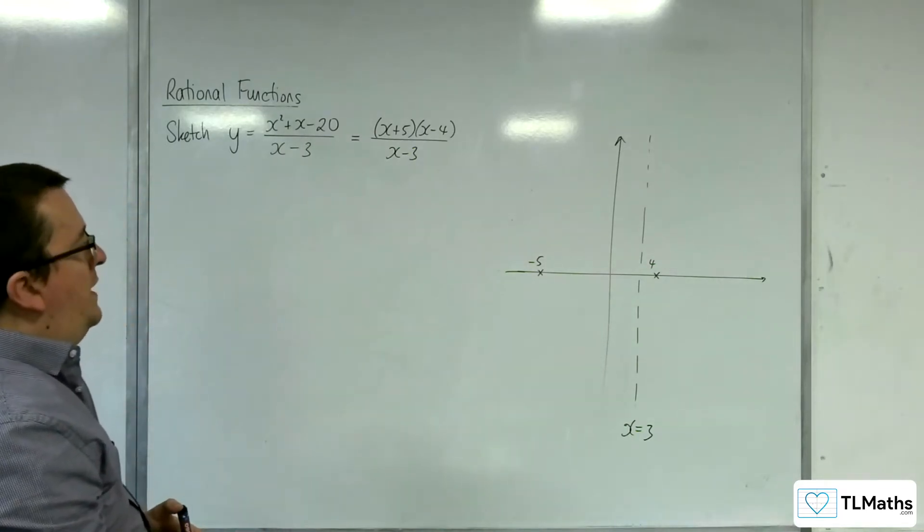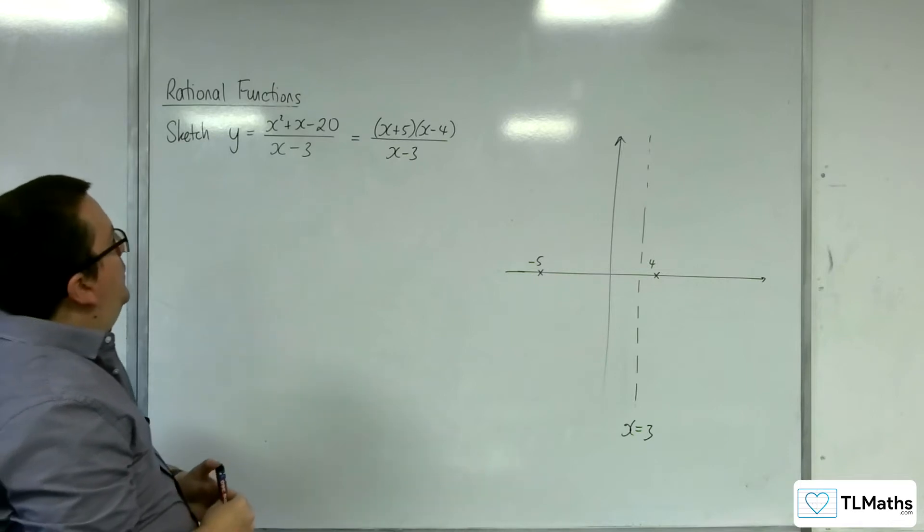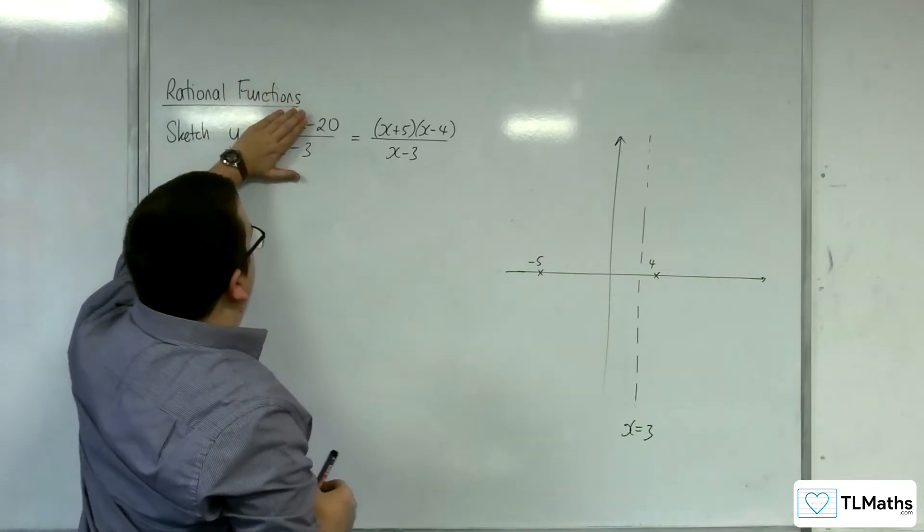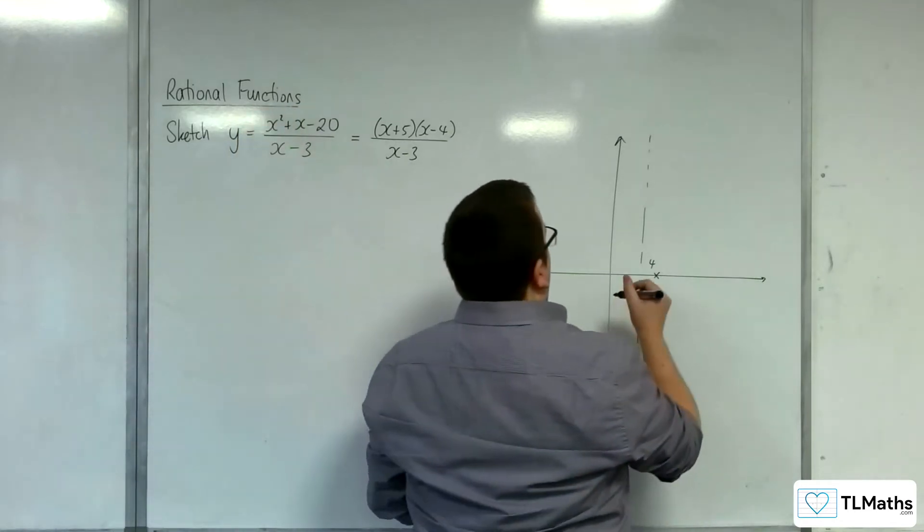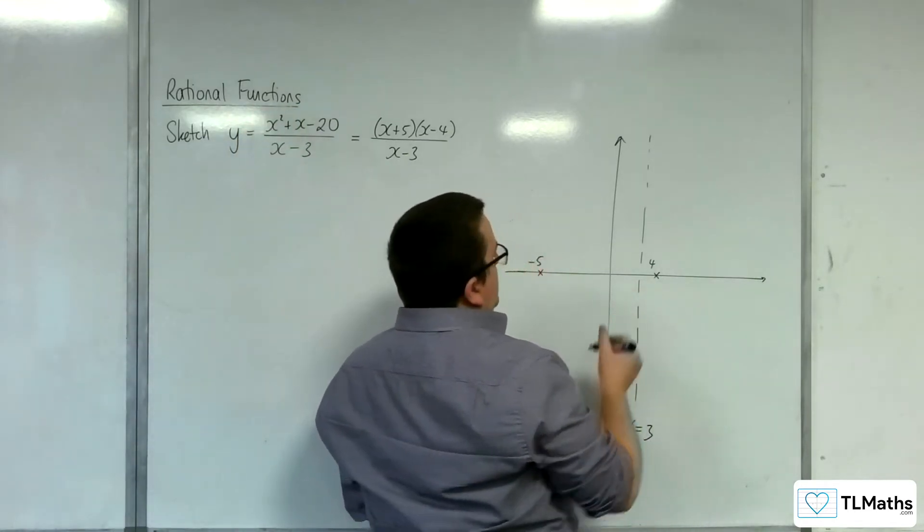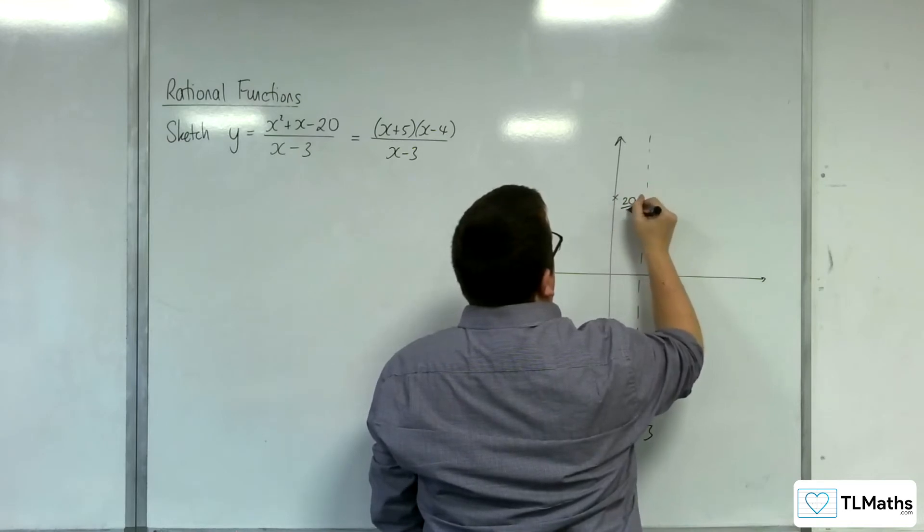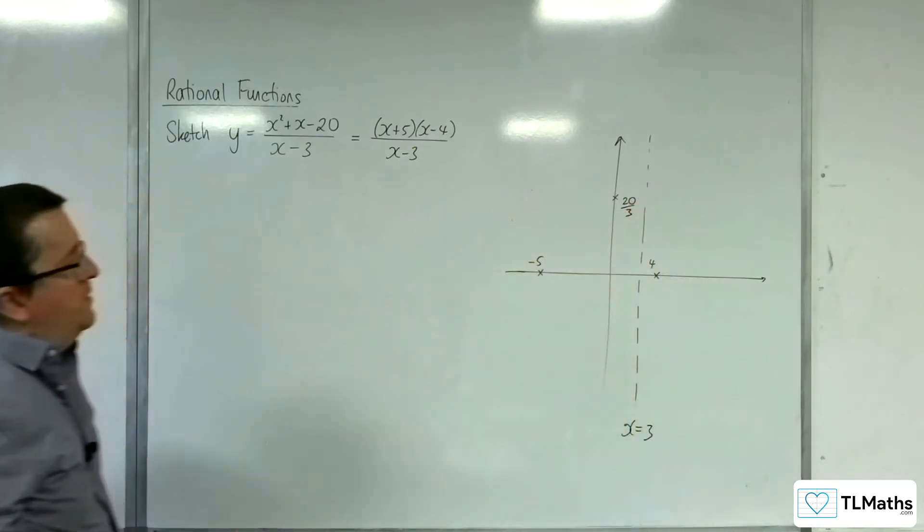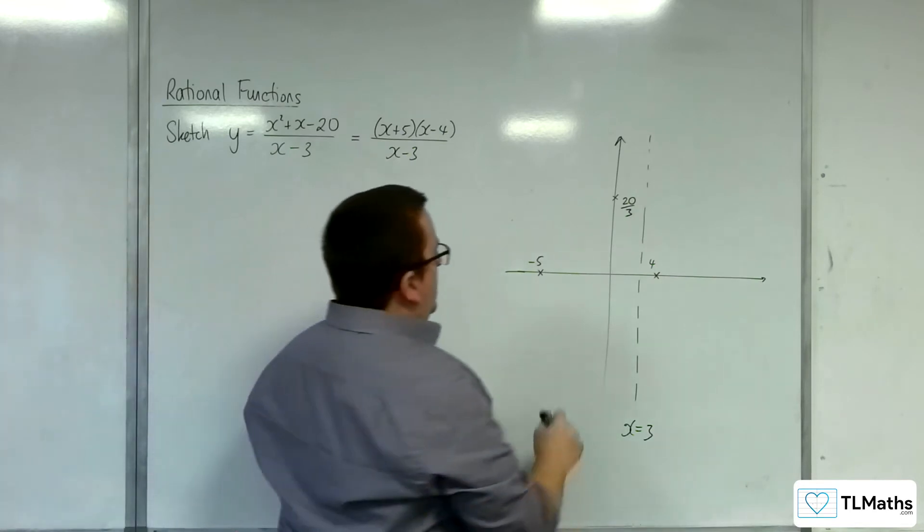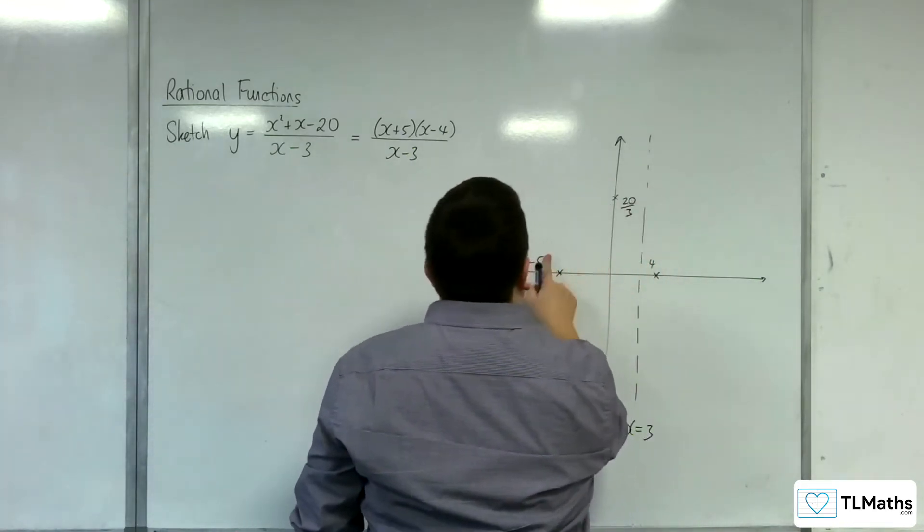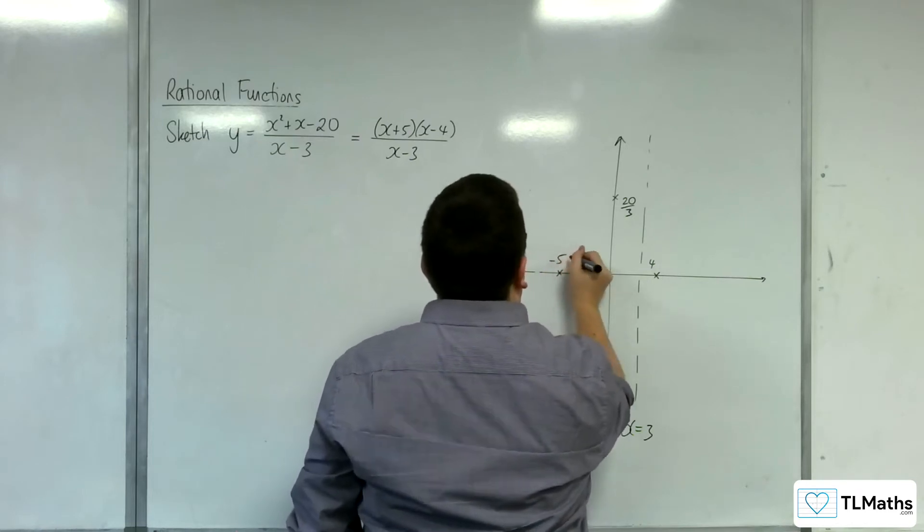How about where it crosses the y-axis? That's when x is 0, and so we'll have minus 20 over minus 3, so 20 thirds. So, 20 thirds, 6 point something. So, 20 thirds over here. Something like that. I think I'll probably need to bring my minus 5 a little bit further along. Let's pop in there.